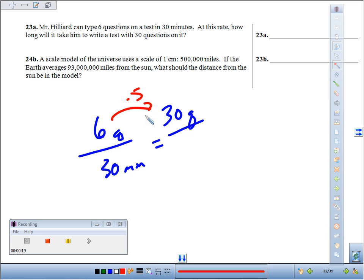Relationship. Times five, times five. 30 times five, 150 minutes, or I suppose you could have said two and a half hours.